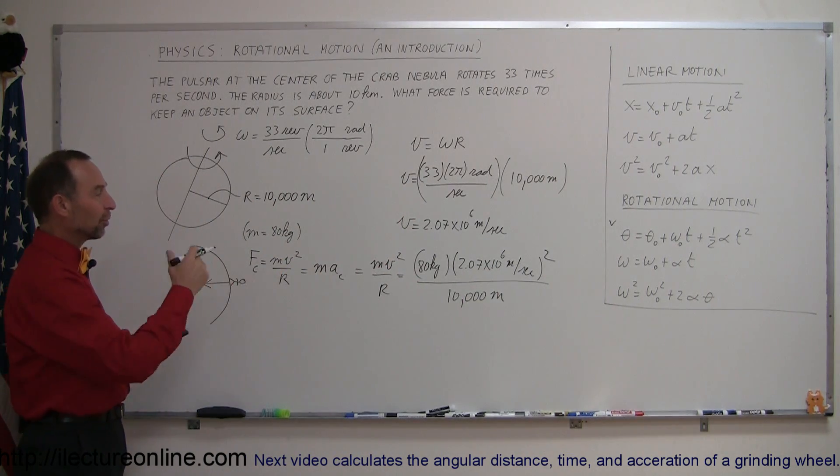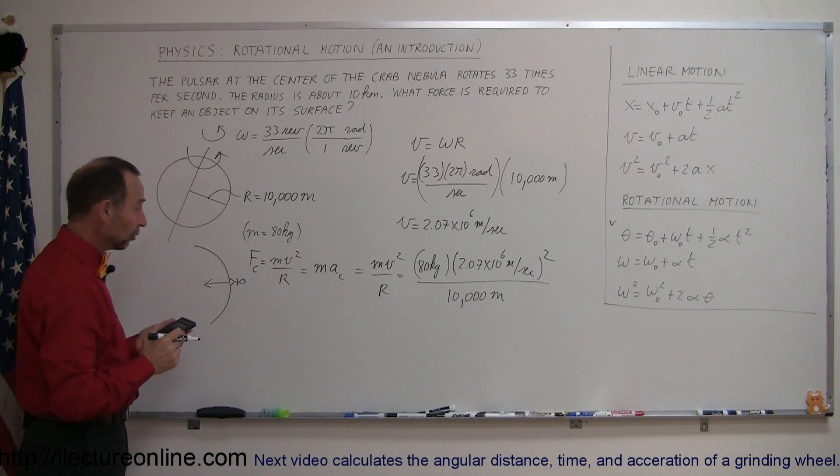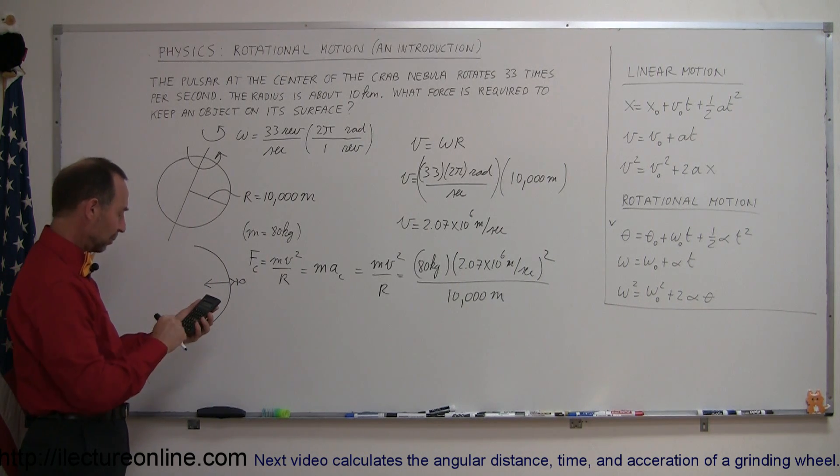And that gives us kilograms meters per second squared, which is the units of Newtons or force. So let's do that, we square this amount, and then we multiply times 80, and then we divide it by 10,000.